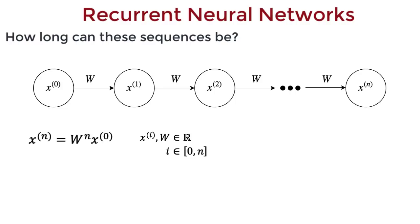Since we have ourselves a network, we need to learn the scalar weight w by the backpropagation through time algorithm. But what happens to the value of xn for a very large n? Well, if w is slightly greater than 1, then w to the n x0 explodes.